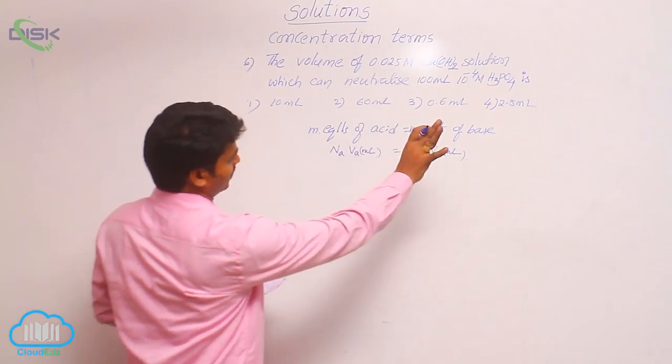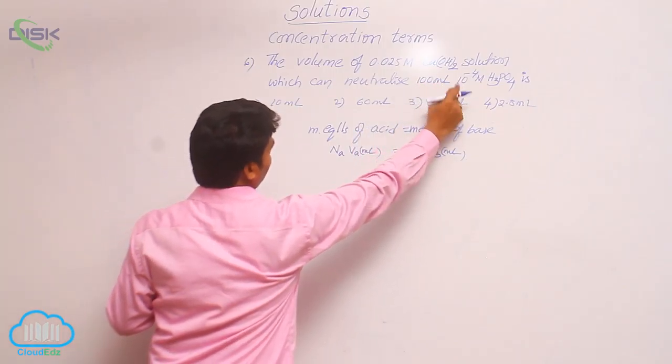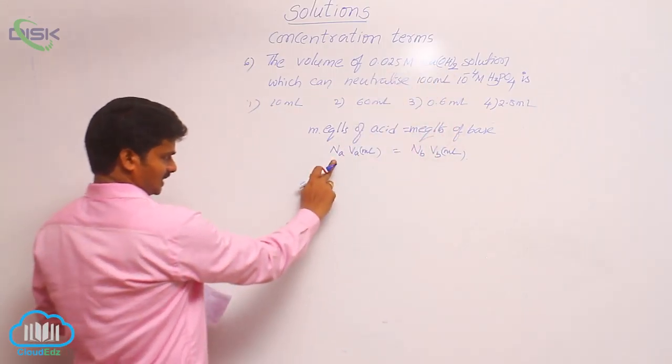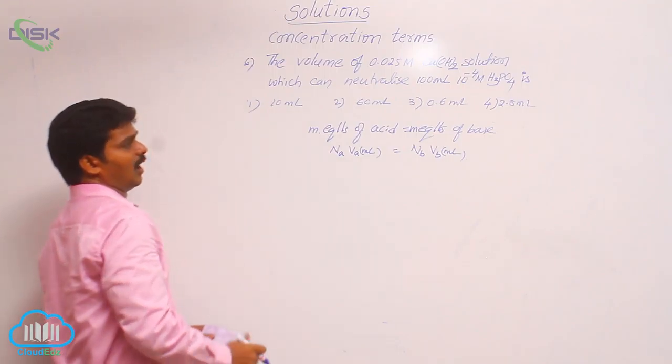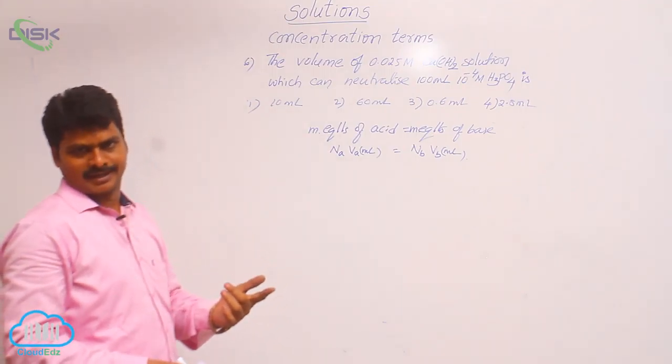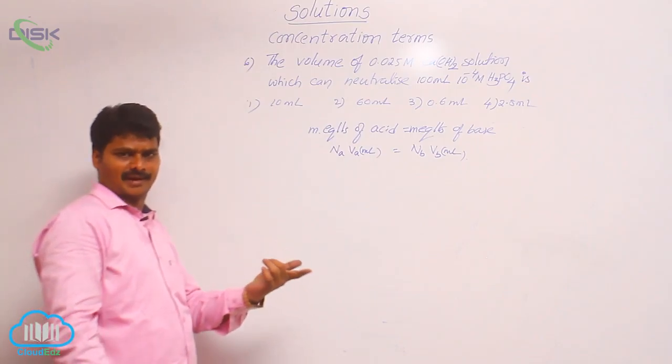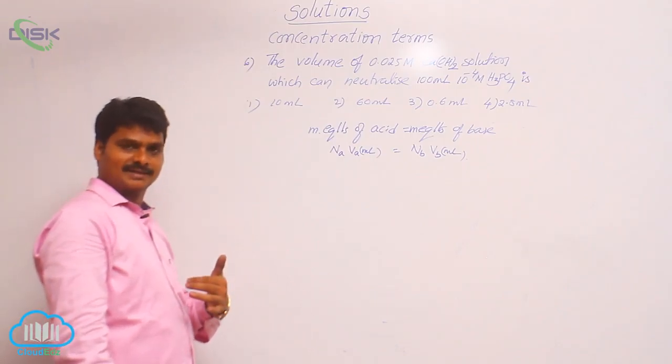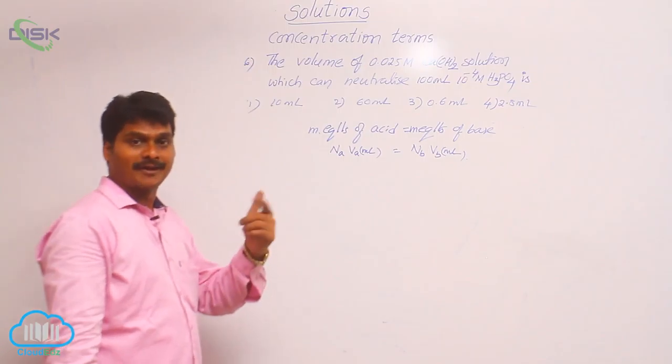About acid we have the information about both volume and molarity, but here we need normality. How to convert? I had given already a relation between molarity and normality. Normality is equal to molarity into n factor.